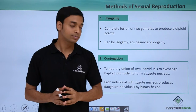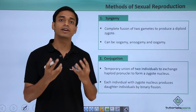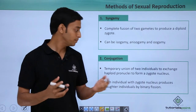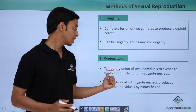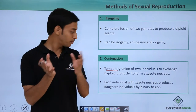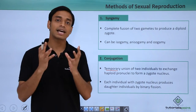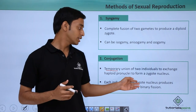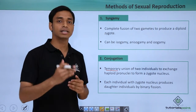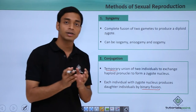The next method of sexual reproduction is conjugation. Conjugation involves a temporary union of two individuals to exchange haploid pronuclei, which helps in the formation of a zygote nucleus. This union is temporary and not permanent. Each individual that receives a zygote nucleus will then produce a daughter individual by binary fission.